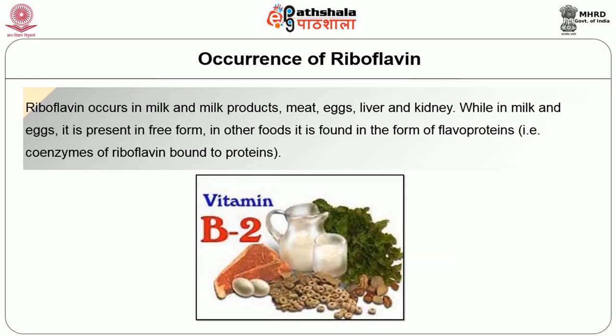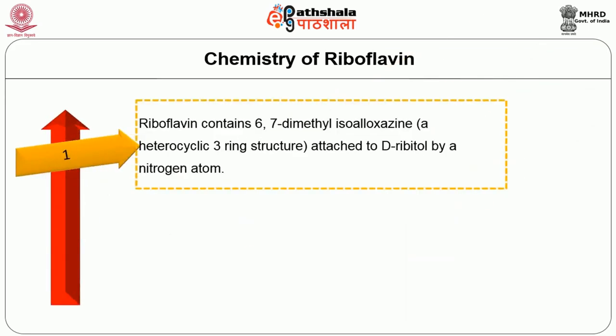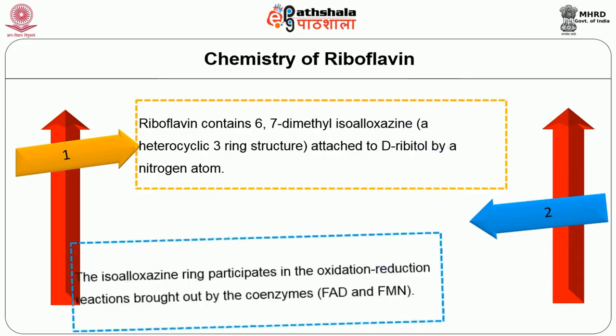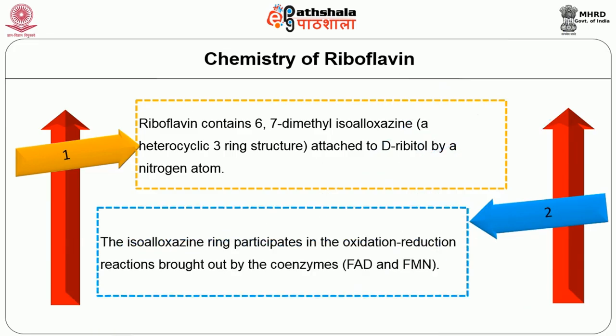Coming to the occurrence of riboflavin, it occurs in milk and milk products, meat, eggs, liver and kidney. While in milk and eggs it is present in free form, in other foods it is found in the form of flavoproteins, that is coenzymes of riboflavin bound to proteins. Riboflavin contains 6,7-dimethylisoalloxazine, a heterocyclic three-ring structure attached to D-ribitol by a nitrogen atom. The isoalloxazine ring participates in the oxidation-reduction reactions brought about by the coenzymes FAD and FMN.